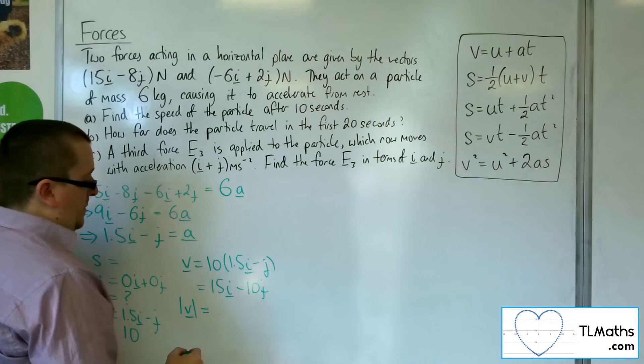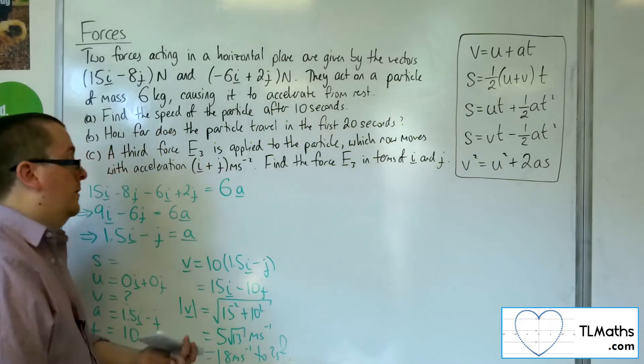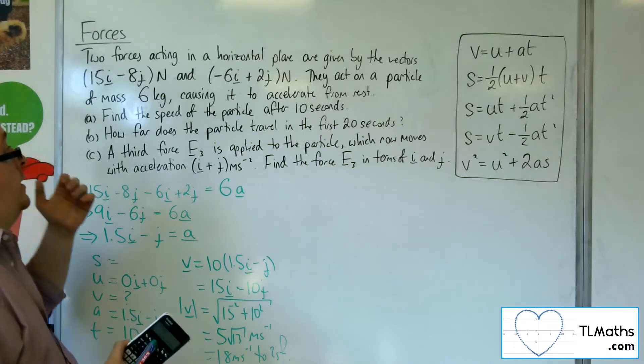So if I want the speed, I want the magnitude of that vector. Which is going to be the square root, because we're going 15 long, 10 down. So 15 squared plus 10 squared. So the square root of 15 squared plus 10 squared is 5 root 13 meters per second. So 18.0, so 18 meters per second to 2 sig fig. So that is the answer to part A, the speed of the particle after 10 seconds.